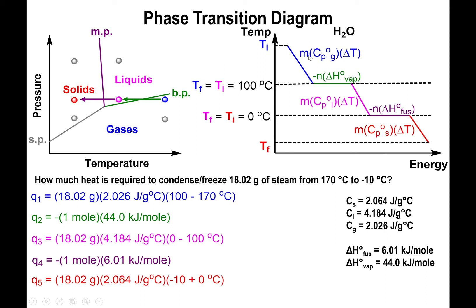With the setup ready, you input the values. For q1 (gas segment): 18.02 g × 2.026 J/(g·°C) × (100 - 170)°C. For q3 (liquid segment): you use 4.184 J/(g·°C) with ΔT = (0 - 100)°C. For q5 (solid segment): you use 2.064 J/(g·°C) with ΔT = (-10 - 0)°C. Each uses q = mcΔT with the corresponding heat capacity.